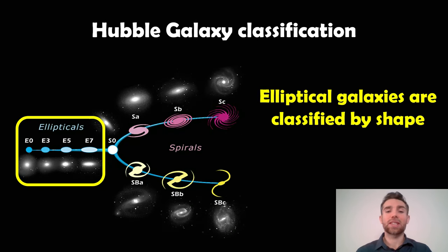Now the ellipticals sit on the left hand side of this Hubble classification diagram. These are mostly classified due to their shape, so you can get more spherical ones which will be like E0 classification and E7 would be more like a cigar shape or very elliptical. So it's purely down to really their shape and how we actually see them, how we classify an elliptical galaxy.